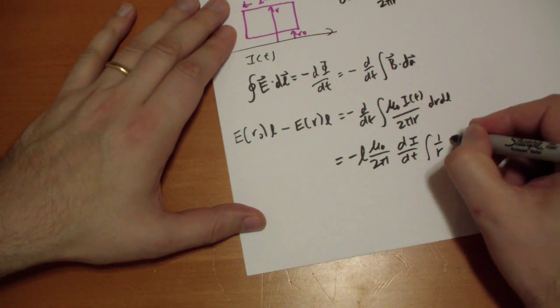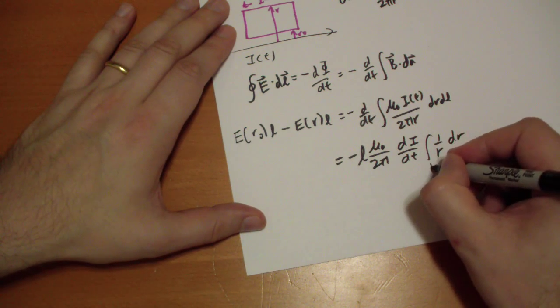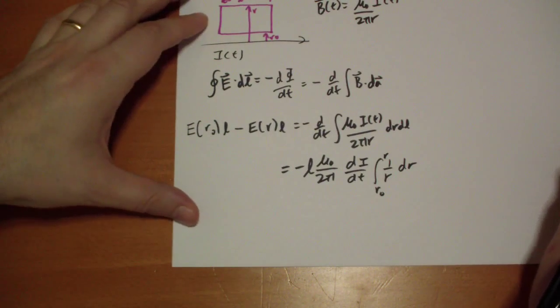And then we get integral 1 over r dr, and the r is going to vary from r naught all the way up to r.